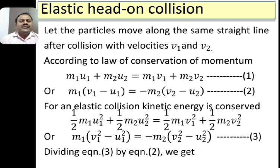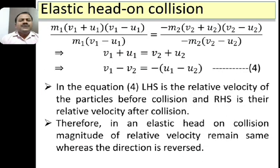Taking M1 as common we get V1² − U1², and taking −M2 as common in the other two terms we get M2(V2² − U2²). Let this be equation 3. Dividing equation 3 by equation 2, we can write M1(V1² − U1²) as (V1 + U1)(V1 − U1). In the denominator we have M1(V1 − U1); those factors cancel. Similarly on the right hand side, −M2(V2 − U2) in the denominator cancels.